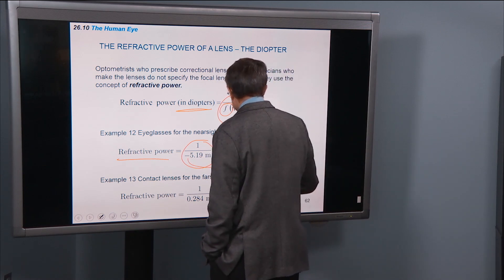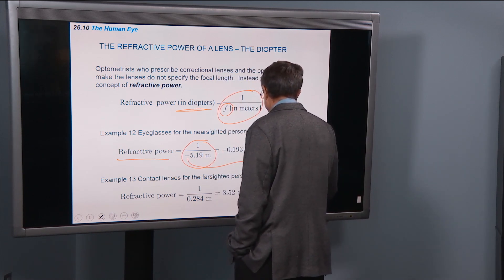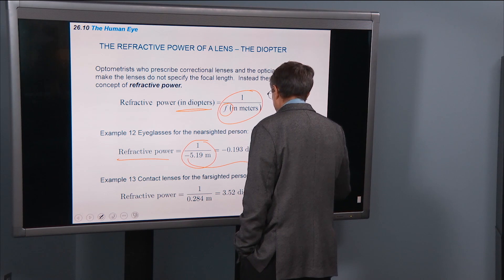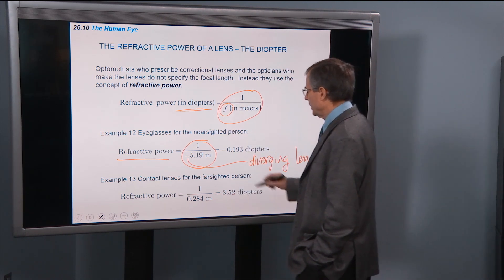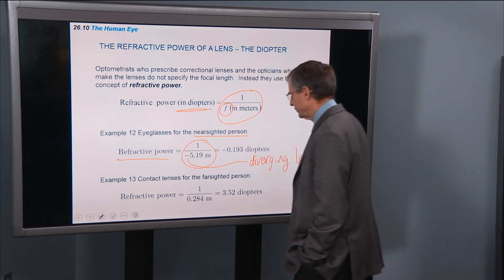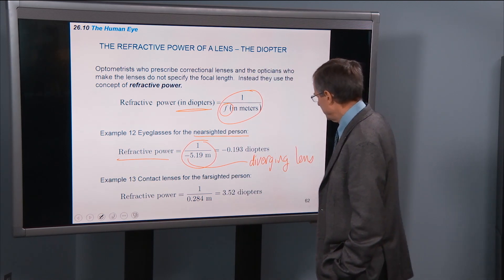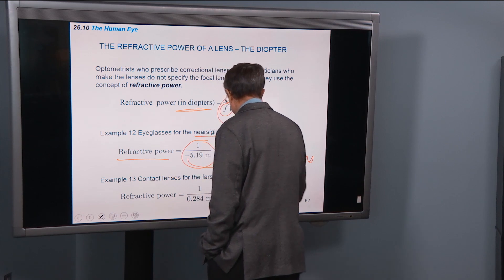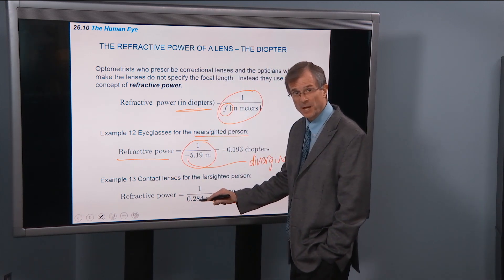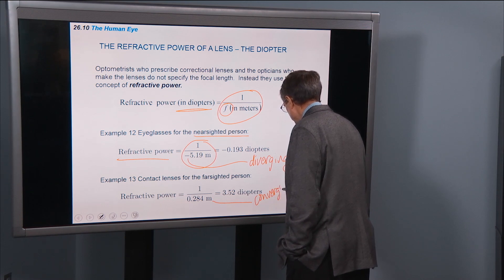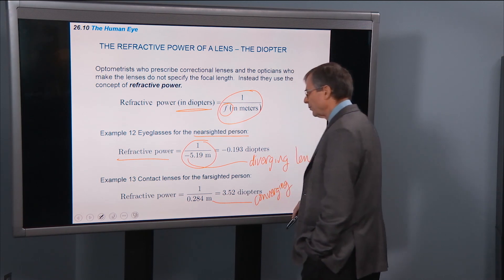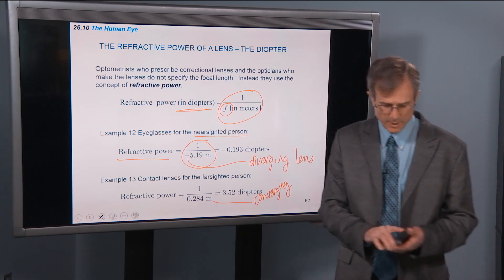And a converging lens, because the focal length is positive, for a farsighted person.